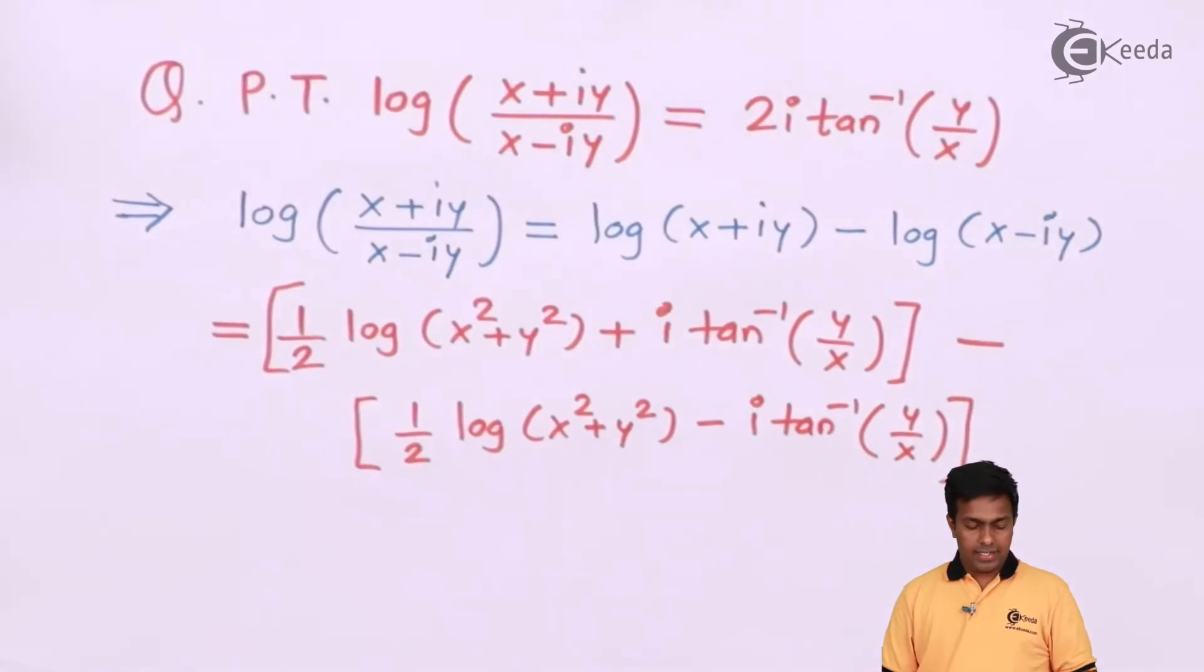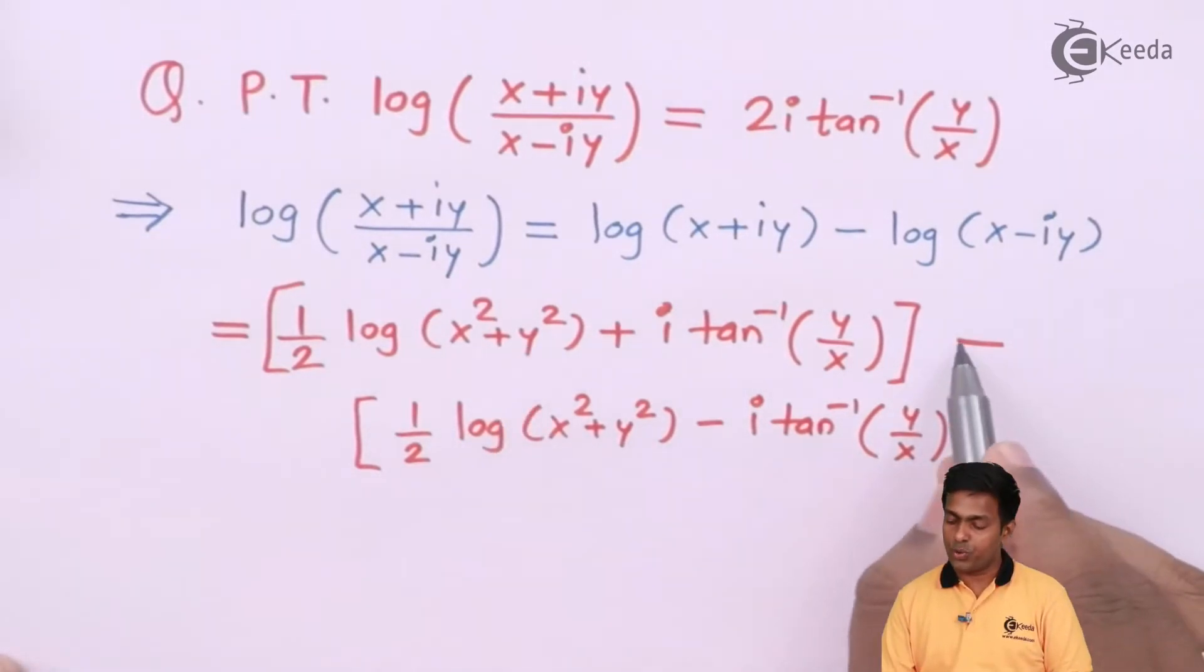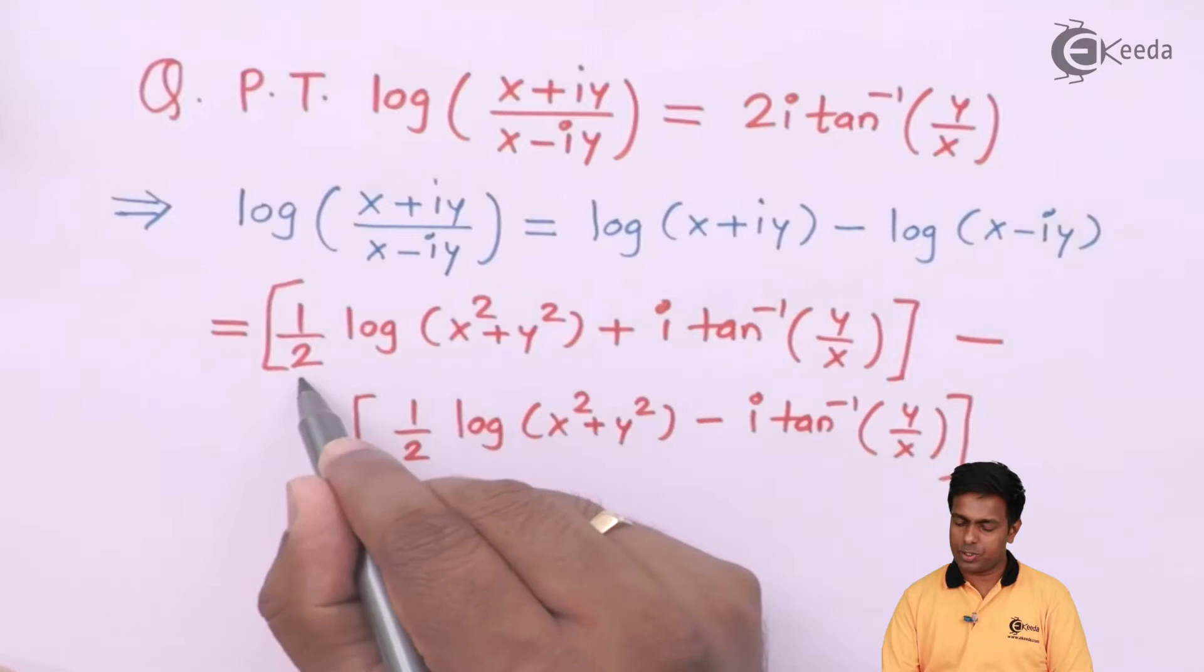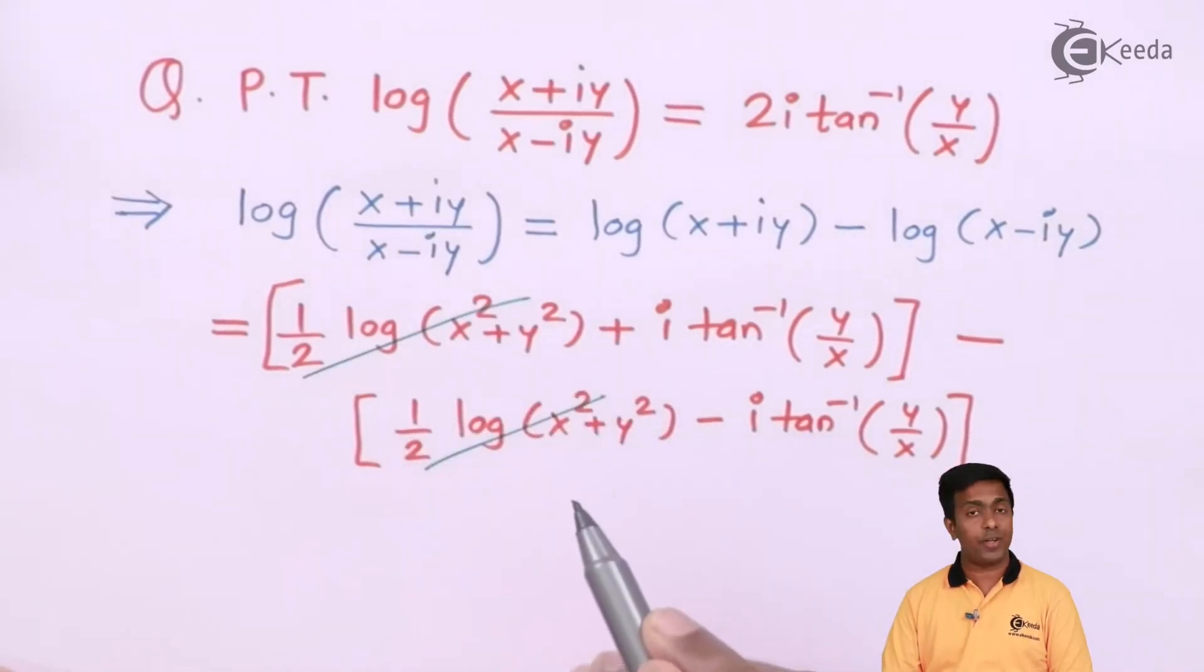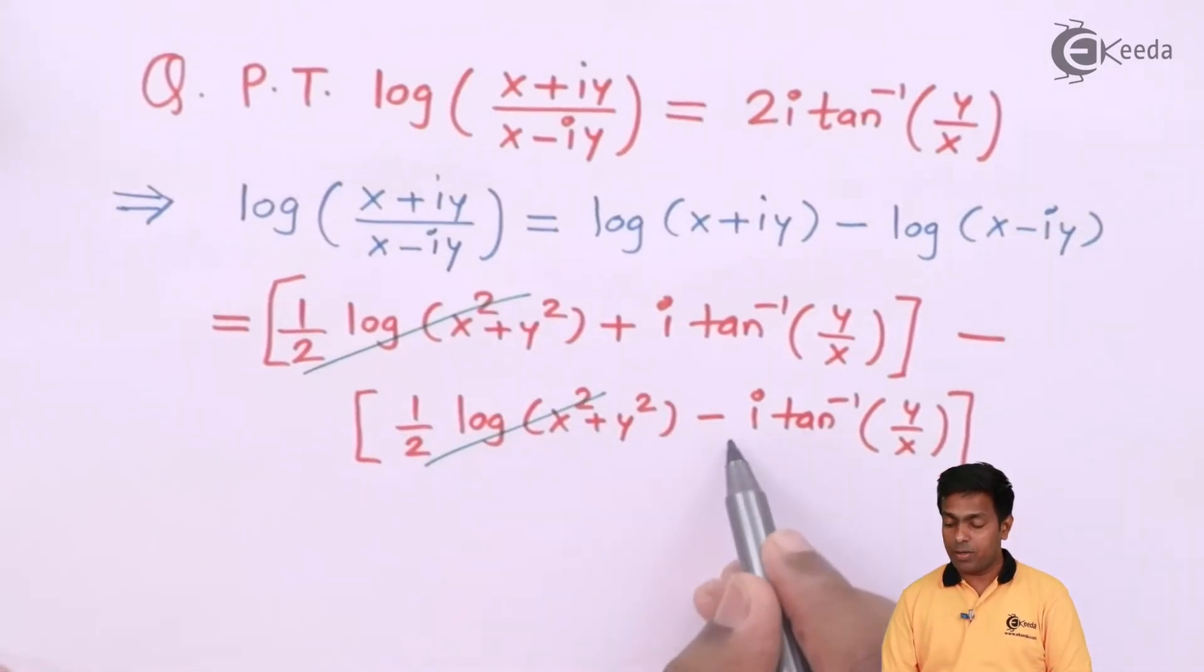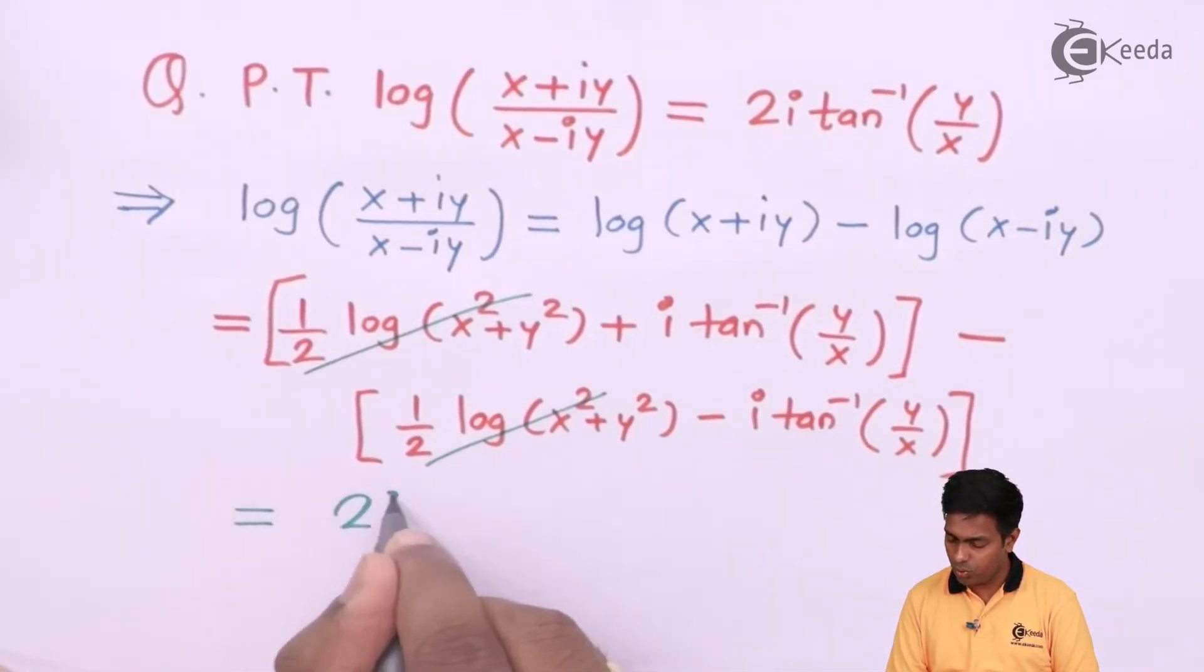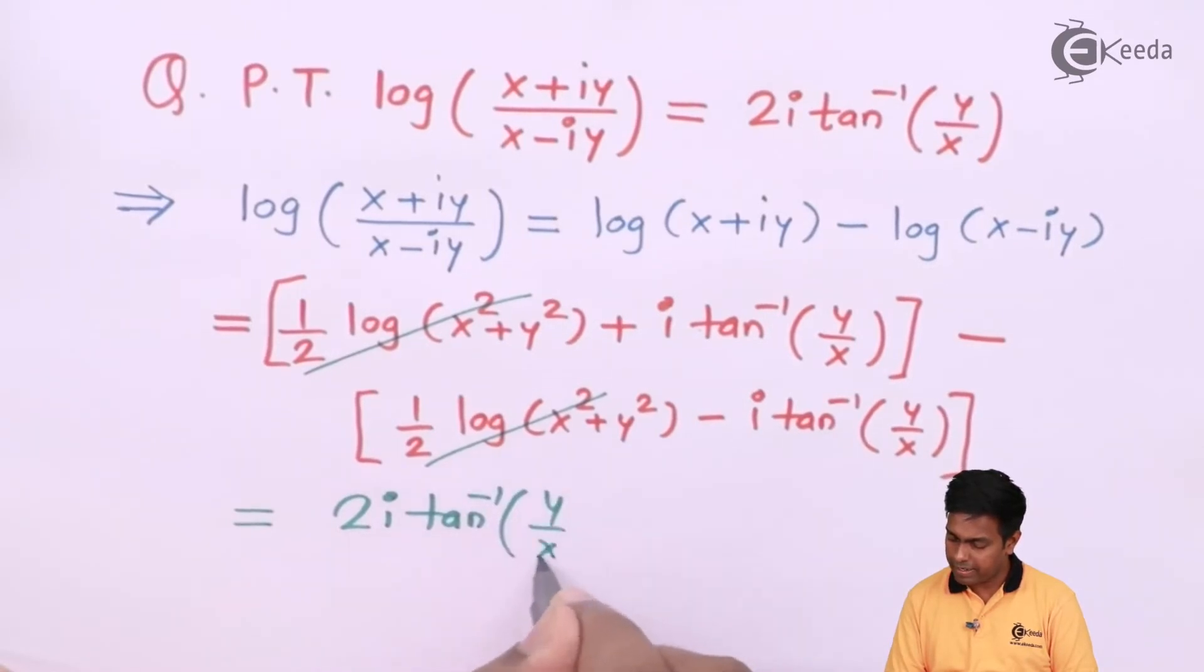If I subtract these two numbers, due to this minus sign, the sign of the second bracket will change. This term will become negative, and that is where this positive and negative term will be cancelled. This will become positive, and that will give us 2i tan inverse of y by x. Here we got the answer.